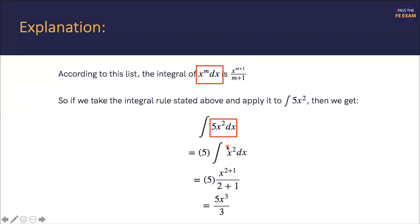So now we're going to want to drill down and write it out according to this formula. You have your 5 there. You have your x to the 2 plus 1, because look at m — see how it's x to the m? This is the critical part: x to the m. So our m is 2. We're going to plug the numbers in and come up with 5x cubed over 3.